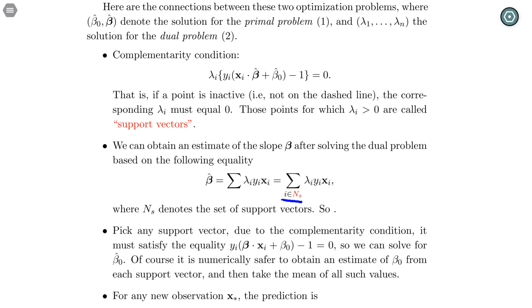Once we solve the slope beta, again, let's stick to the support vectors. We can pick any one of them because they have to satisfy this equality. And we know y, we know x, we know beta, then we can solve beta_0.